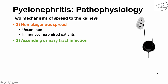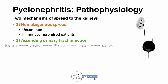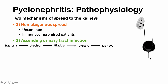Before discussing the ascending route, let's briefly review the anatomy of the renal system. The kidney filters and produces urine that flows down the ureters to the bladder, and then the urine is expelled out of the body through the urethra. What happens is that bacteria adhere to the urethra and slowly climb up. Once bacteria reach the bladder, this is classically known as a urinary tract infection, or cystitis. The bacteria can then continue to climb up the ureters and eventually reach the kidneys, leading to acute pyelonephritis.